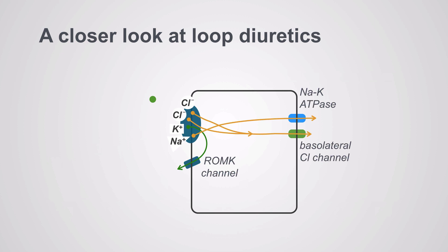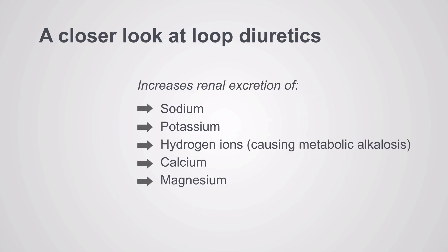Looking at how loop diuretics actually work at the thick ascending limb: Lasix, represented as a green dot, blocks the chloride slot — it fits into the chloride slot and shuts down the sodium-potassium-2-chloride transporter. This will increase the renal excretion of sodium, potassium, hydrogen ions causing metabolic alkalosis, calcium, and magnesium.